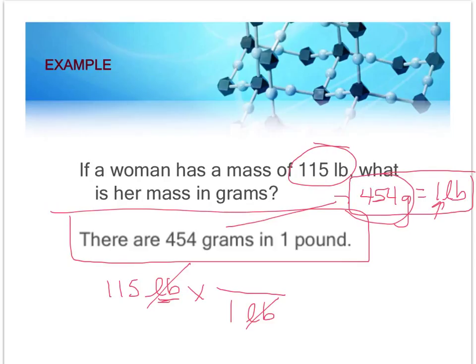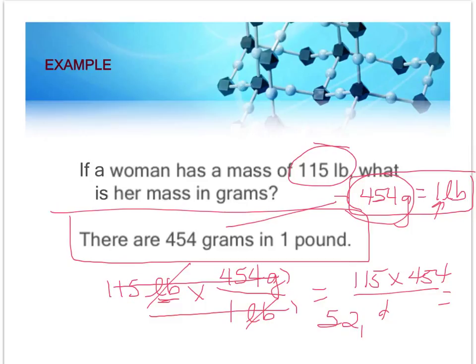Now I'm going to multiply across the numerator. In other words, 115 times 454. I'm going to multiply across the denominators, and that just gives me a one. And therefore my final answer is 52,210. What are the units of my final answer? Grams.